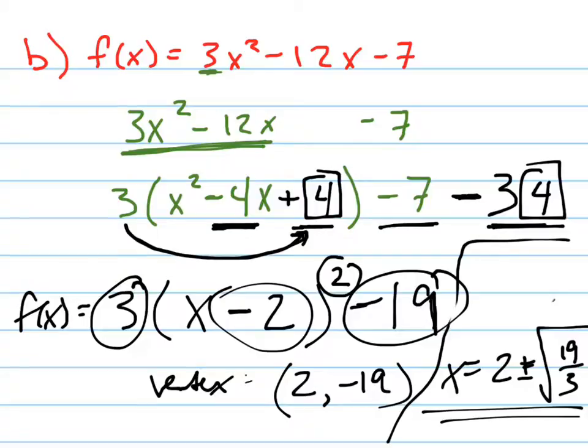Some teachers will ask you to rationalize the denominator and stuff like that. But that's your answer. It's 2 plus or minus the square root of 19 over 3. Those are your 2 x-intercepts.